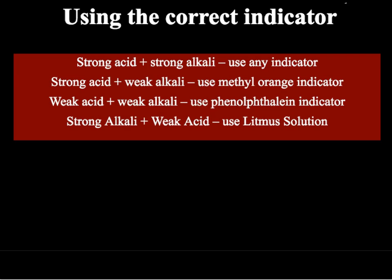To decide on the correct indicator, it depends on the relative strengths of your acid and alkali. For a strong acid and strong alkali, you can use any of the standard indicators. For a strong acid and weak alkali, use methyl orange. For a weak acid and weak alkali, use phenolphthalein. For a strong alkali and weak acid, you can use litmus solution or also phenolphthalein.